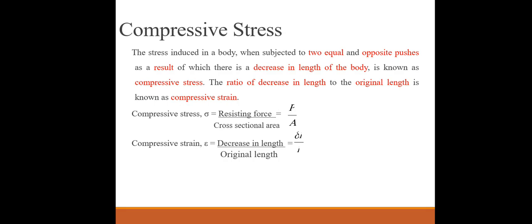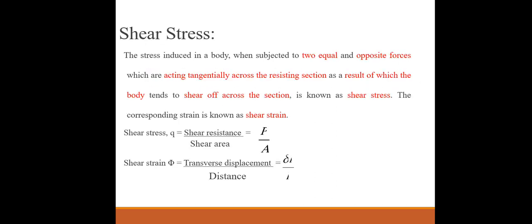The next type is compressive stress. The stress induced in a body when subjected to two equal and opposite pushes, as a result of which there is a decrease in length, is known as compressive stress. The ratio of decrease in length to the original length is known as compressive strain. Compressive stress equals resisting force divided by cross-sectional area; compressive strain equals decrease in length divided by original length.